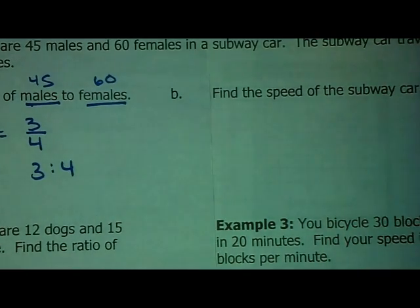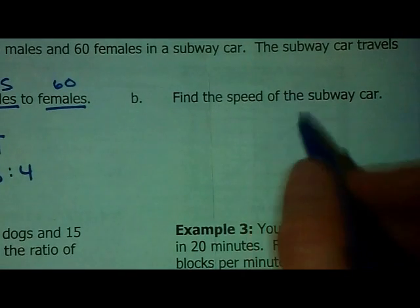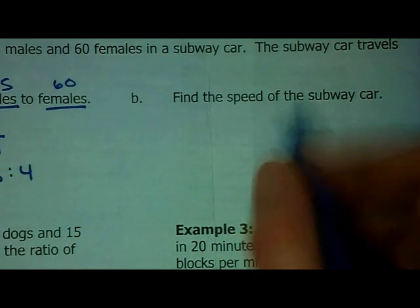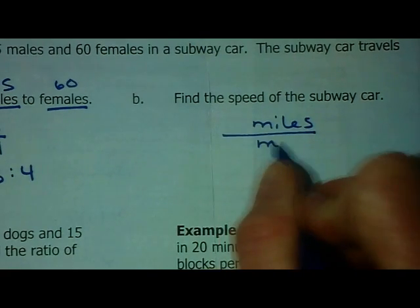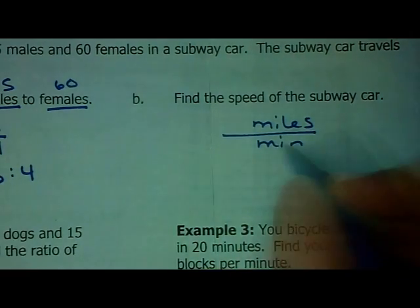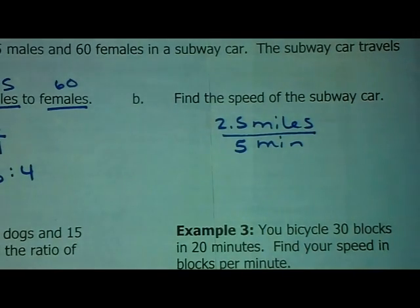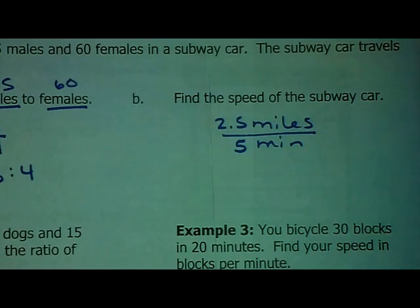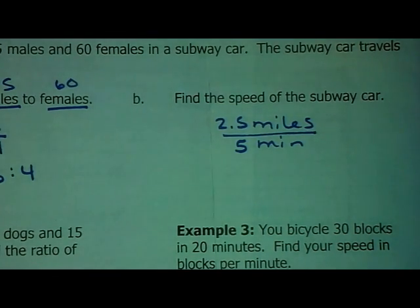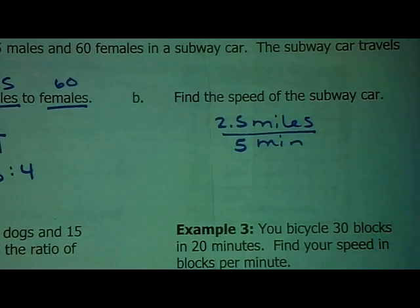So, miles per minute means it's a rate. So, we're going to do this the same way. Since it's miles per minute, the miles is on the top. The minutes is on the bottom. And, it says 2.5 to 5. Now, if we're looking for speed, you wouldn't say, I'm traveling 2.5 miles per 5 minutes. We would want the speed per 1 minute. That's the unit rate.